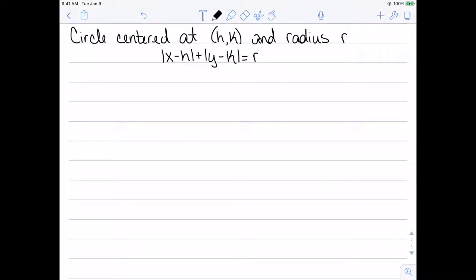Let's suppose we have a circle centered at the point h, k and radius r. The equation for circles is given by absolute value of x minus h plus the absolute value of y minus k equal to r.